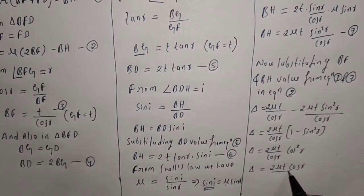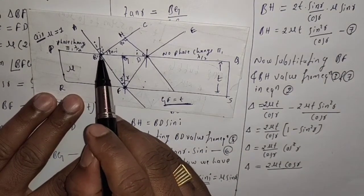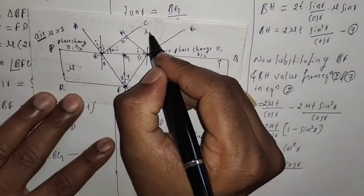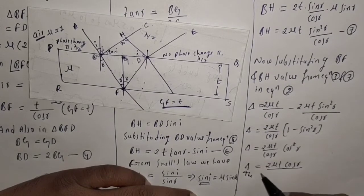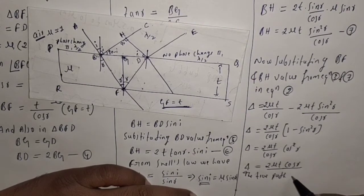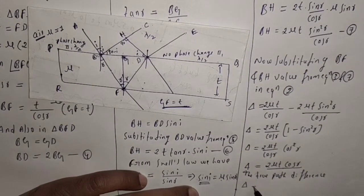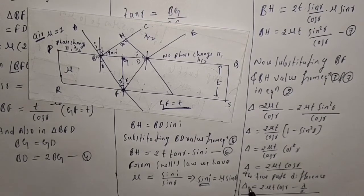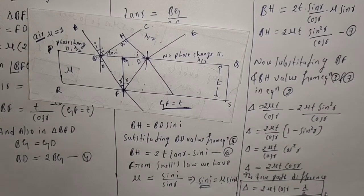This is the optical path difference, but it is not the true path difference because the reflected ray has a phase difference of phi, equivalent to a path difference of lambda by 2. So the true path difference is: delta equals 2mu·t·cos R minus lambda/2. We subtract lambda/2 from the above equation. This gives the true path difference for reflected light. Let us denote this equation by 8.